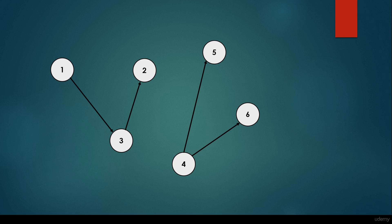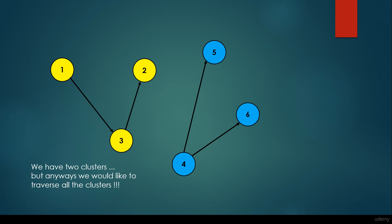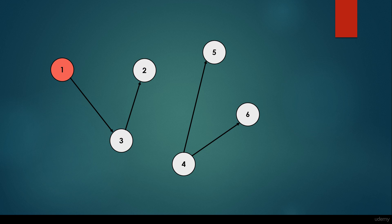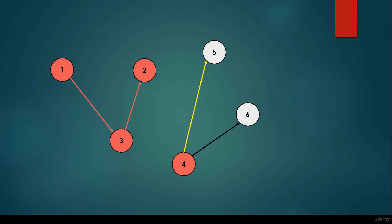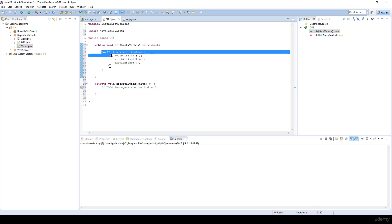Why do we need this for loop? Because let's consider that we have two clusters: 1-2-3 and 4-5-6. We would like to traverse the whole graph no matter how many distinct components it has — visiting each and every vertex. We start at the first cluster's root vertex, and with that vertex we can visit every vertex within that cluster, visiting neighbor 3, then neighbor 2. But we haven't visited all nodes yet, so we continue. That's why we have the for loop — we consider every vertex in the vertex list. At the end we will have visited all vertices in the graph. If we have a single connected graph with just one cluster, we don't need the for loop; we only need it when we have multiple clusters.